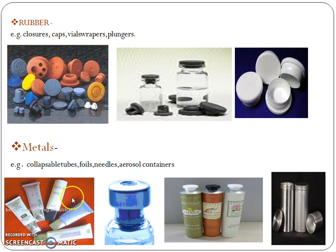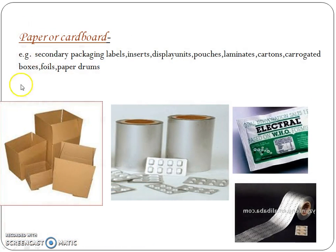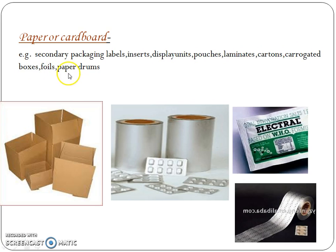Metals are used to prepare collapsible tubes, oils, needles, and aerosol containers. Paper or cardboard is an example of secondary packaging and is used to prepare labels, inserts, pouches, laminates, cottons, corrugated boxes, and paper drums.